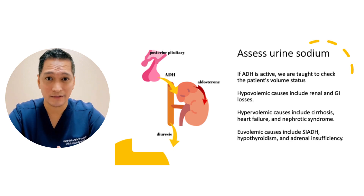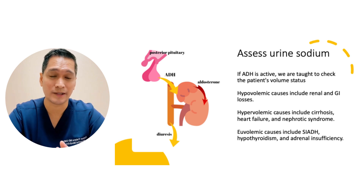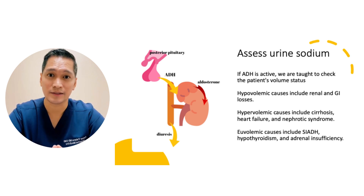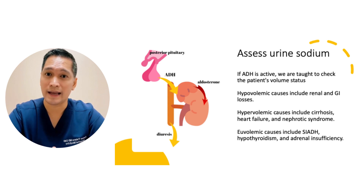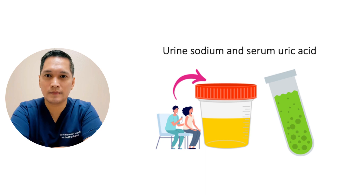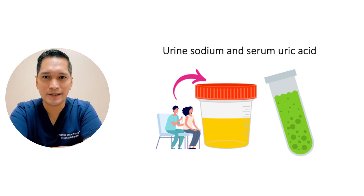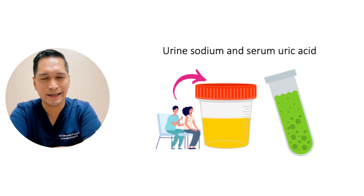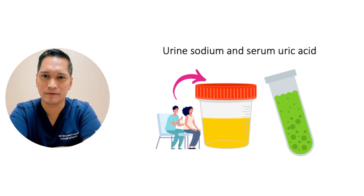If ADH is active, we are taught to check the volume status of the patient. Hypovolemic causes include renal and GI losses. Hypervolemic causes include cirrhosis, heart failure, and nephrotic syndrome. And euvolemic causes include SIADH, hypothyroidism, and adrenal insufficiency. However, physical examinations are not reliable — specifically, it is difficult to determine a euvolemic patient from a hypovolemic or hypervolemic patient.